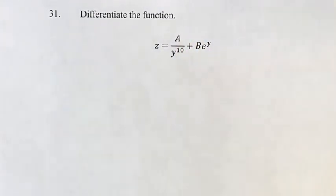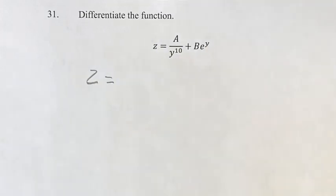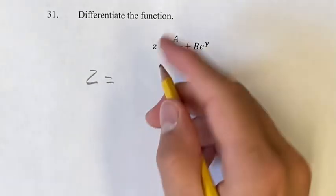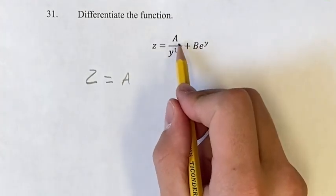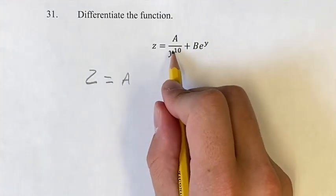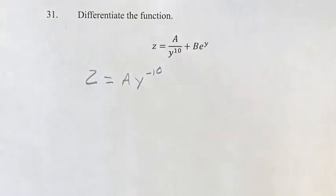Okay, so first we want to get this into the form of a power function. How do we do that? Well, we have y to the tenth power in the denominator. If we want to bring that into the numerator, we multiply the exponent by negative 1. So y to the tenth in the denominator is y to the negative 10 in the numerator.